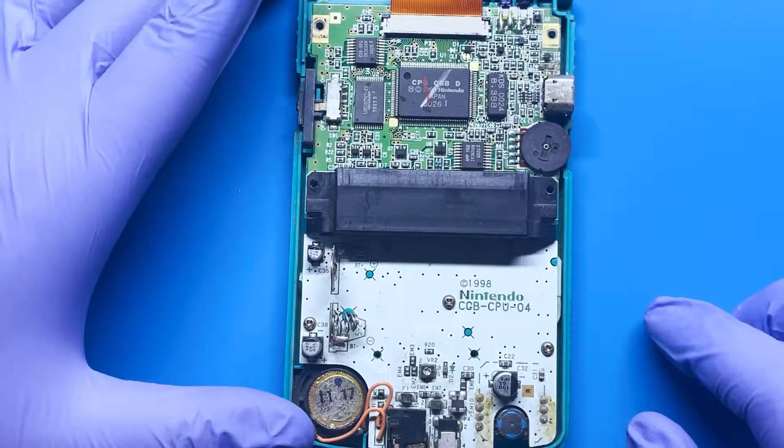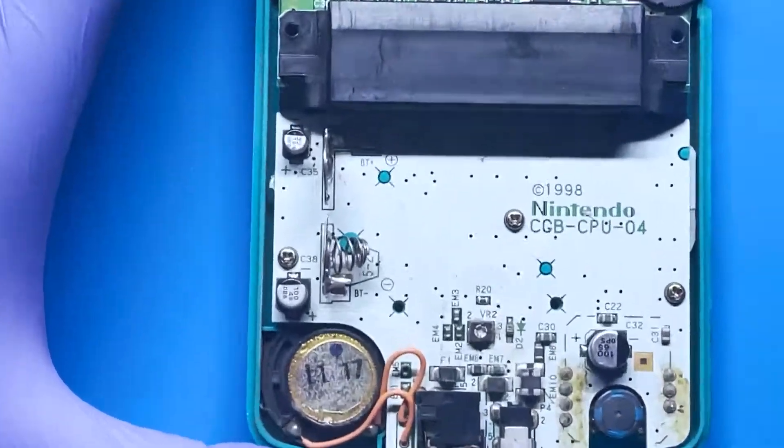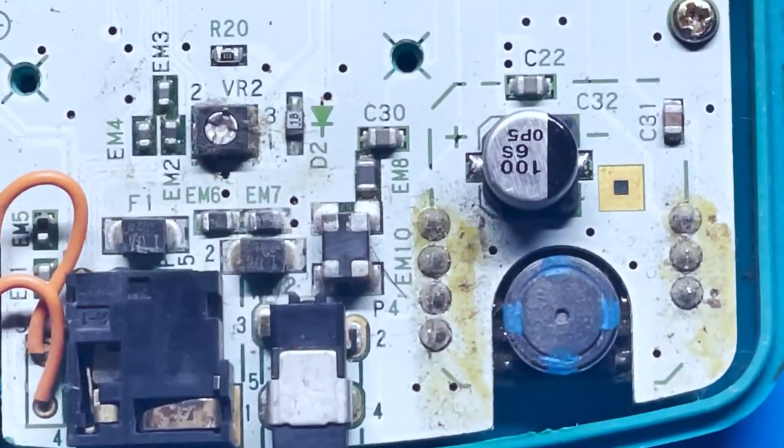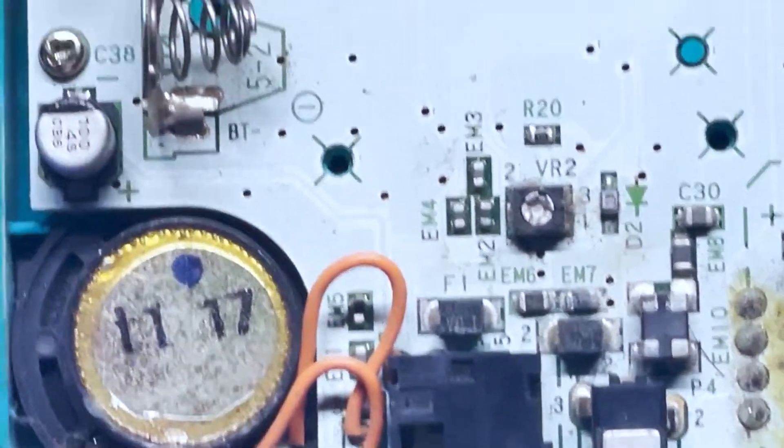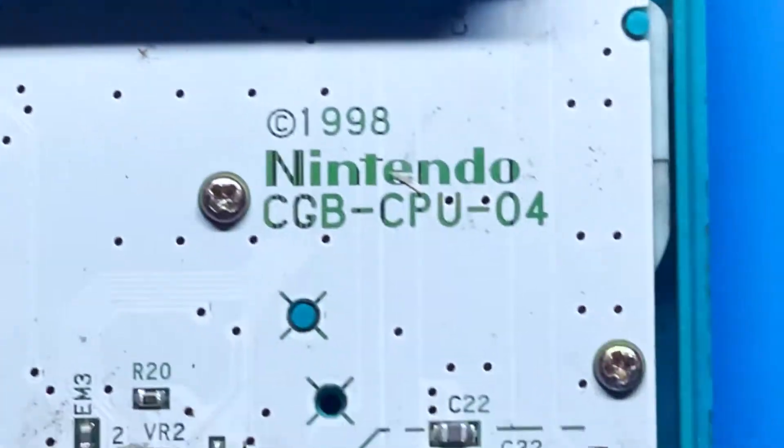So I don't really think you can see it here, but it looks pretty dirty. So let me go ahead and zoom in. As you can see here, it looks really dirty. It just looks like there's a lot of dirt. We're going to go ahead and clean this up with some IPA.